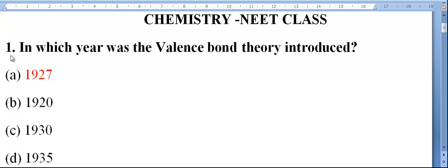This is a model question in chemistry. In which year was the Valence Bond theory introduced? First option 1927, second option 1920, third option 1930, fourth option 1935. The correct answer is 1927.